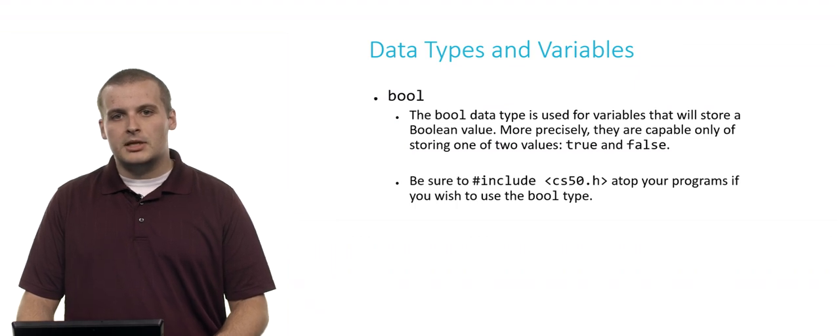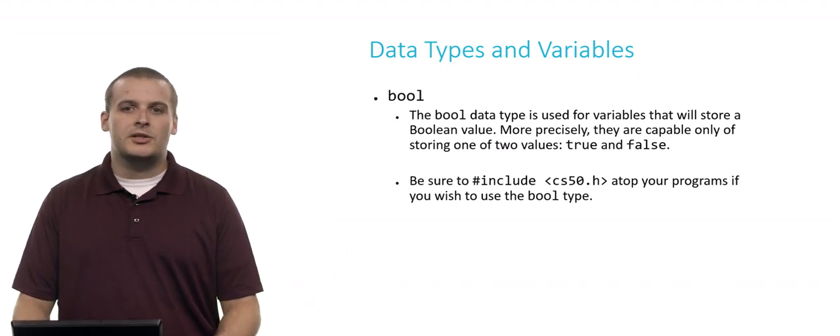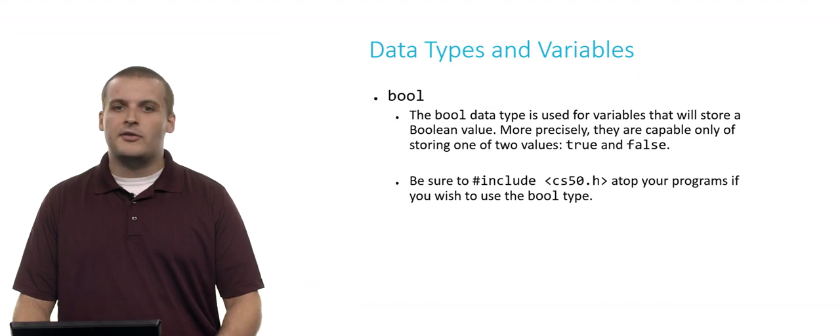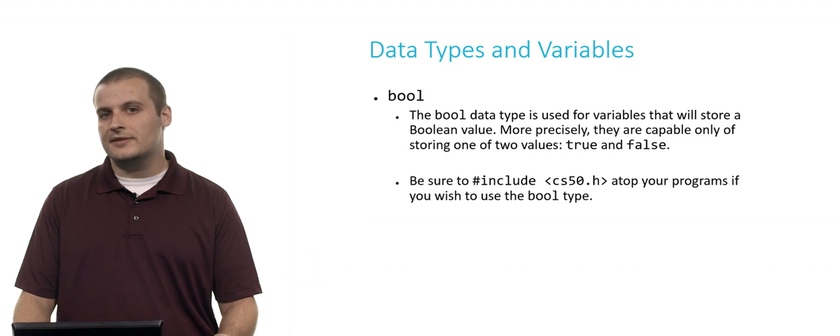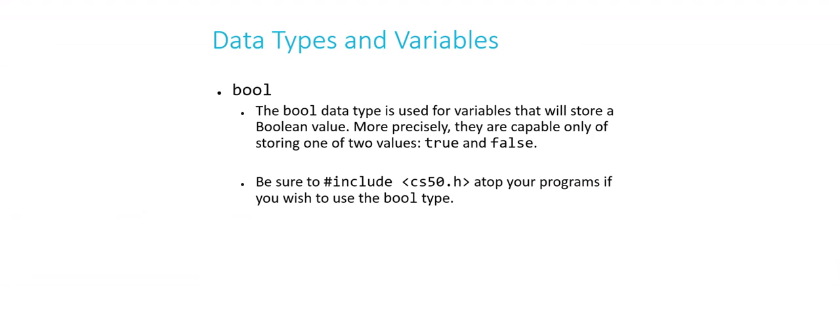The first of these is bool. The Boolean data type, bool, is used for variables that will store a Boolean value. A Boolean value is capable of only holding two distinct values, true and false. This seems pretty fundamental, right? It's kind of a surprise that this doesn't exist in C as it's built in. But we've created it for you. If you forget to pound include CS50.h and you start using Boolean type variables, you might encounter some problems when you're compiling your program.